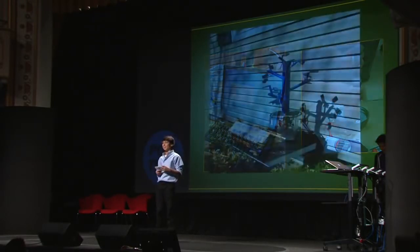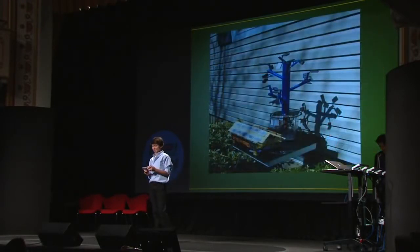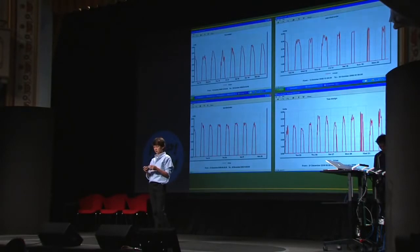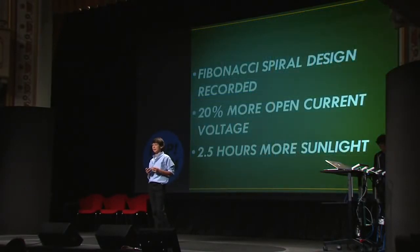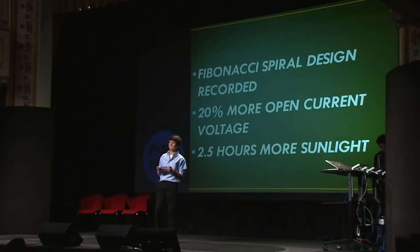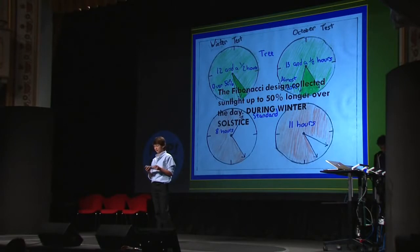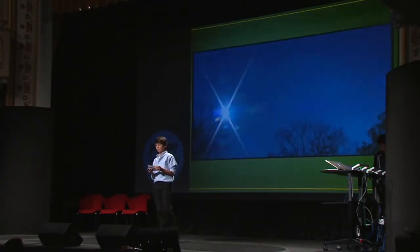The results were really surprising. The Fibonacci design recorded 20% more open current voltage and collected up to 2.5 more hours of sunlight during the day than the flat panel design. The most interesting results were in December at the winter solstice, when the sun was at a low point in the sky. The Fibonacci design collected sunlight up to 50% longer over the day.